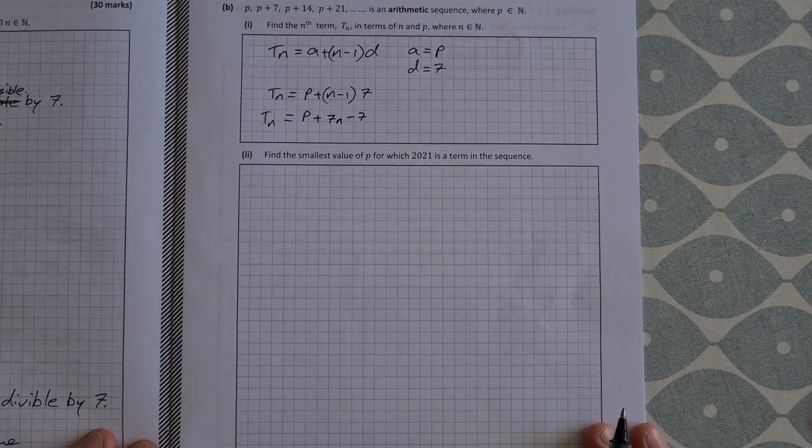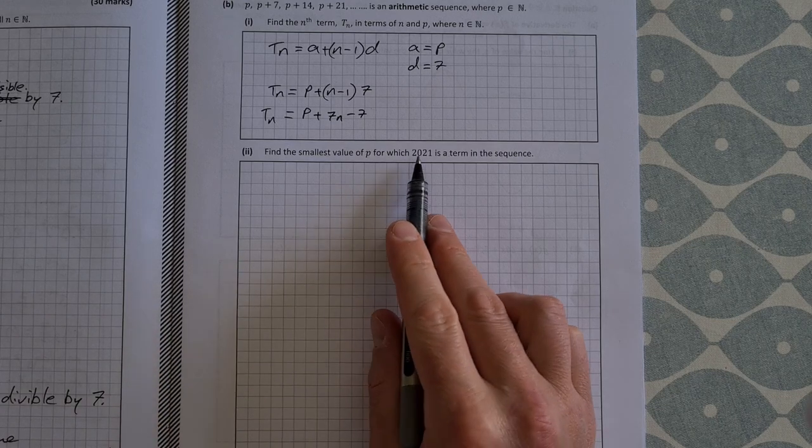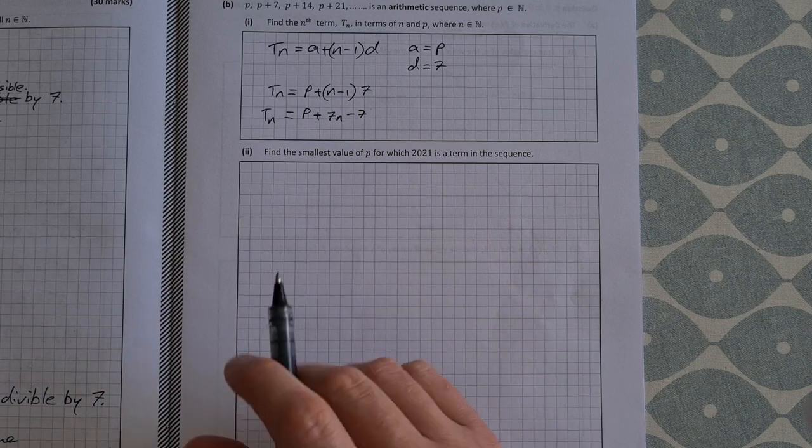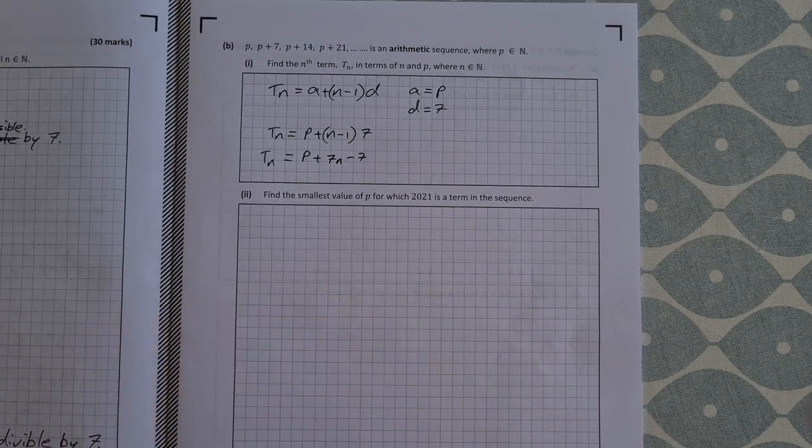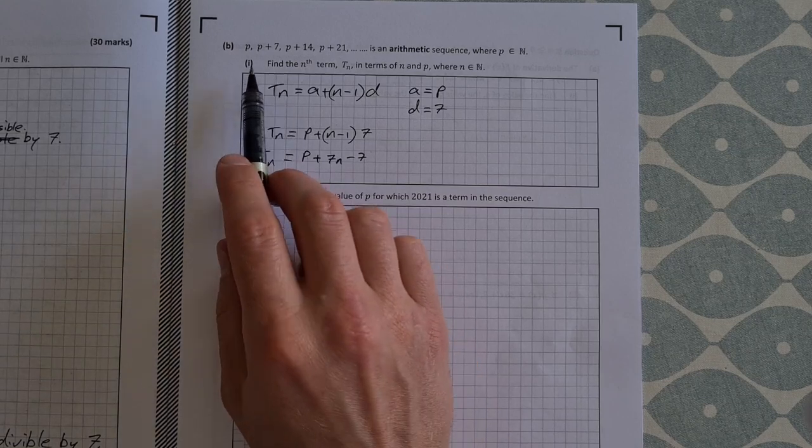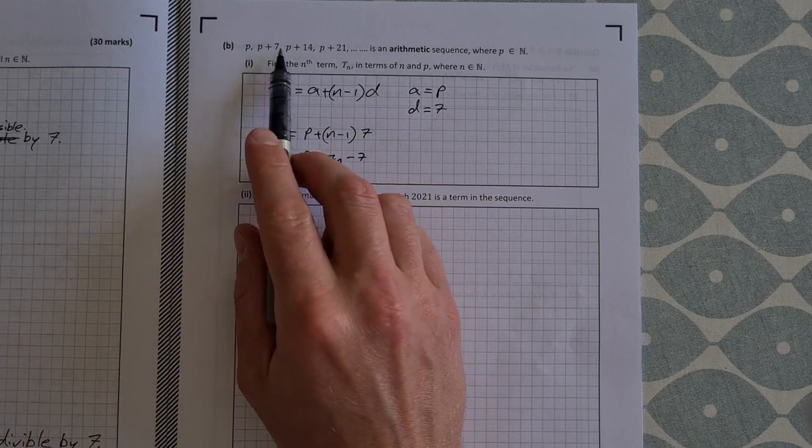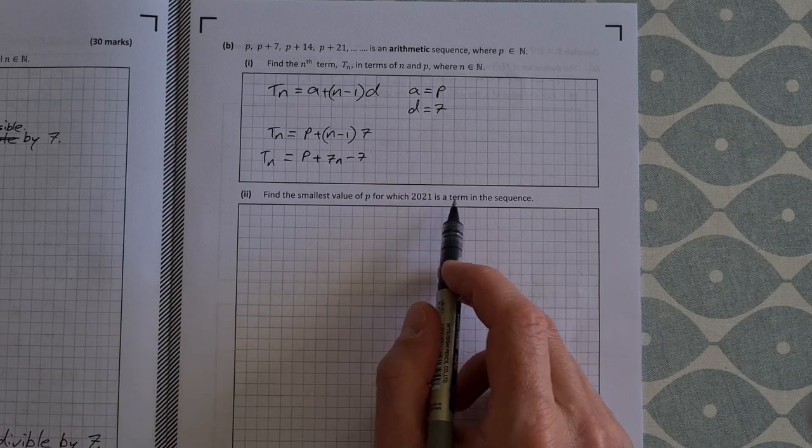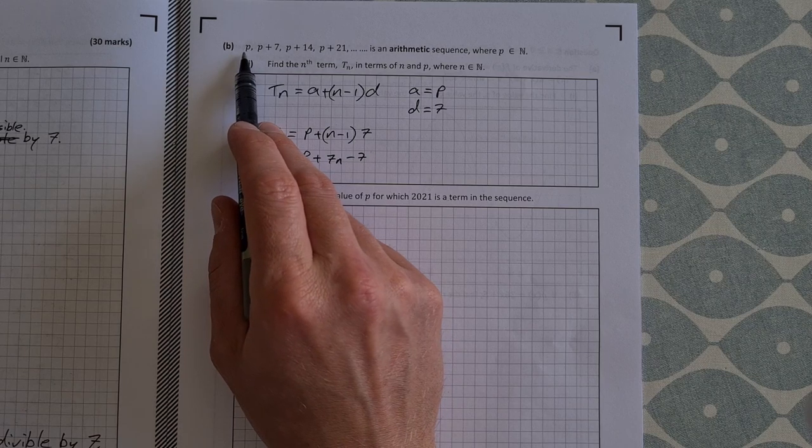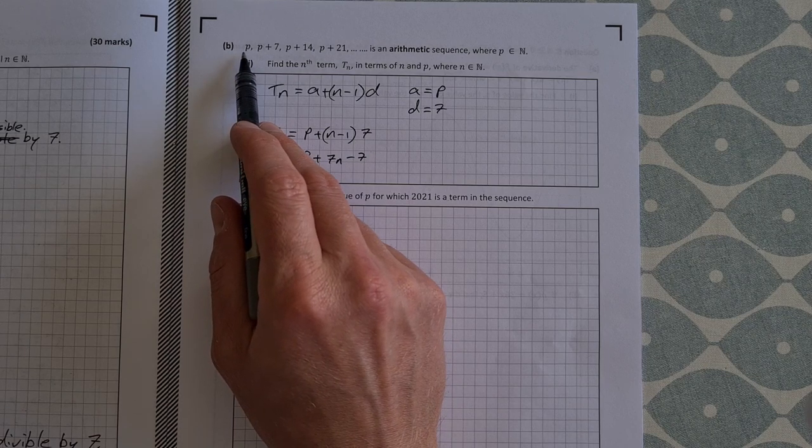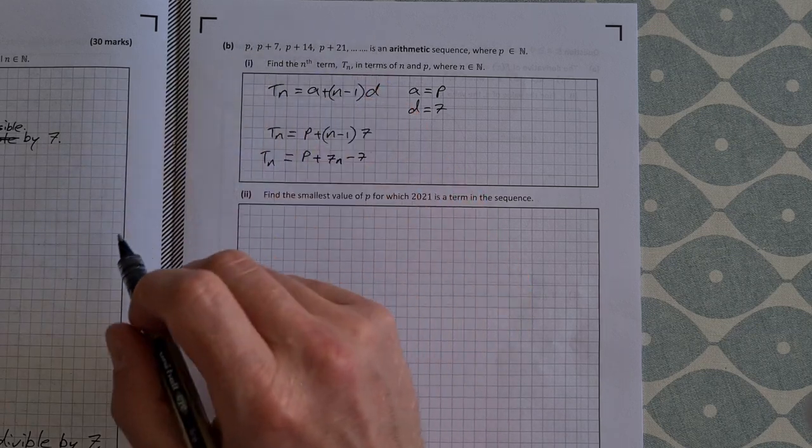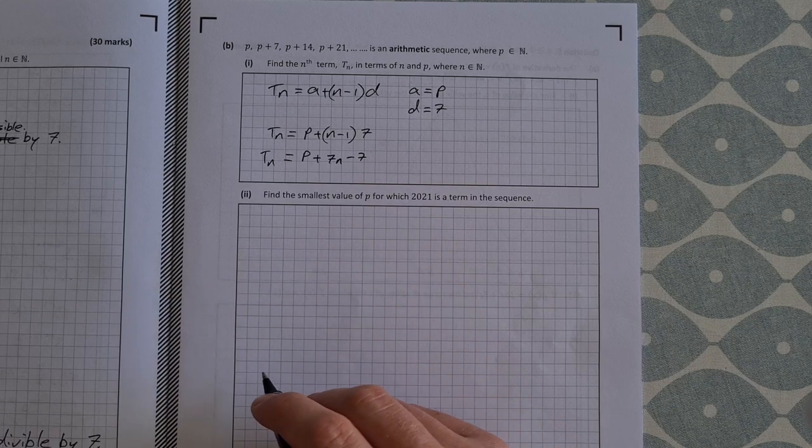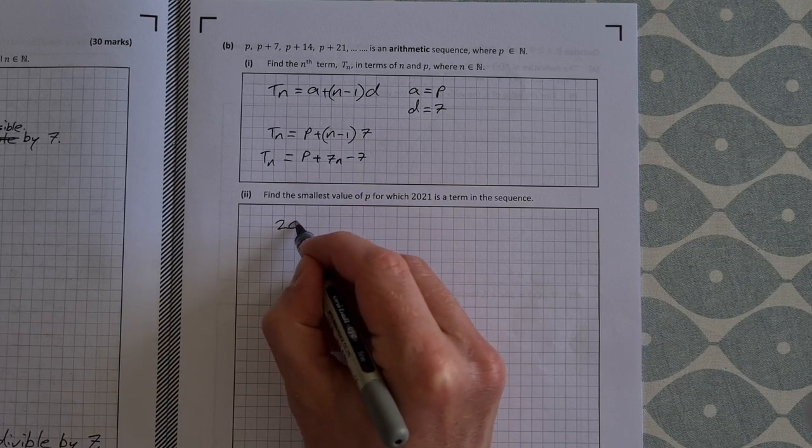Part 2 then asks us to find the smallest value of p, for which 2021 is a term in the sequence. So for this, we know that the sequence is increasing by 7 each time. So for 2021 to be a term in the sequence, whatever p is, you're going to add p to a multiple of 7 to get the sequence, to have this be a term of the sequence.